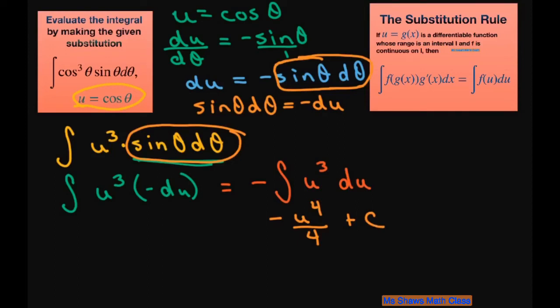And now the only thing you have to do is substitute back in your u. So this equals -1/4, and u is cos θ. So it's going to be -1/4 cos⁴θ + c. And that is your final answer.